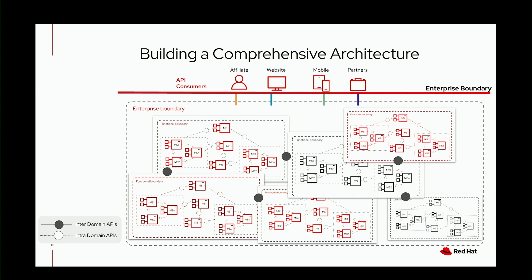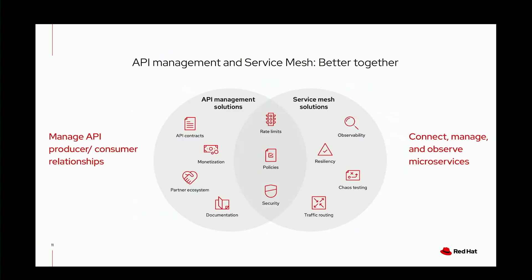This is where inter-domain APIs and intra-domain APIs come into picture. Inter-domains — the various functional boundary boxes — is where you apply API management, because you have an official contract for how you speak with each other. Within a particular functional boundary, you use service mesh. You don't have to choose between service mesh or API management — both can come together to help you build a fantastic architecture to realize whatever you need.